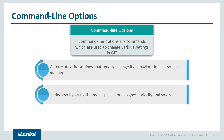Through command line options, you can change various settings in Git. These settings can be executed in a hierarchical manner — they change behavior hierarchically by giving priority to the most specific one and so on.